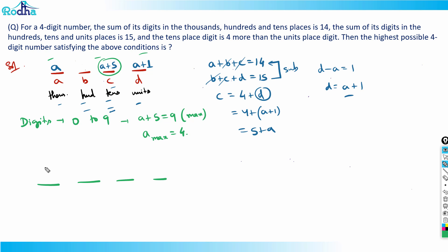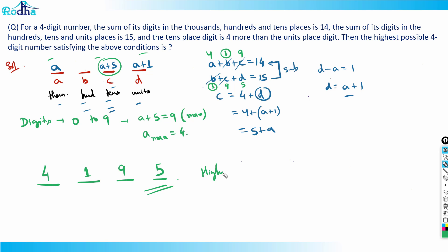If a = 4, then c = 9 and d = 5. Now to find b: from a + b + c = 14, we get 4 + b + 9 = 14, so b = 1. We can verify: b + c + d = 1 + 9 + 5 = 15. So the highest possible 4-digit number satisfying all conditions is 4195.